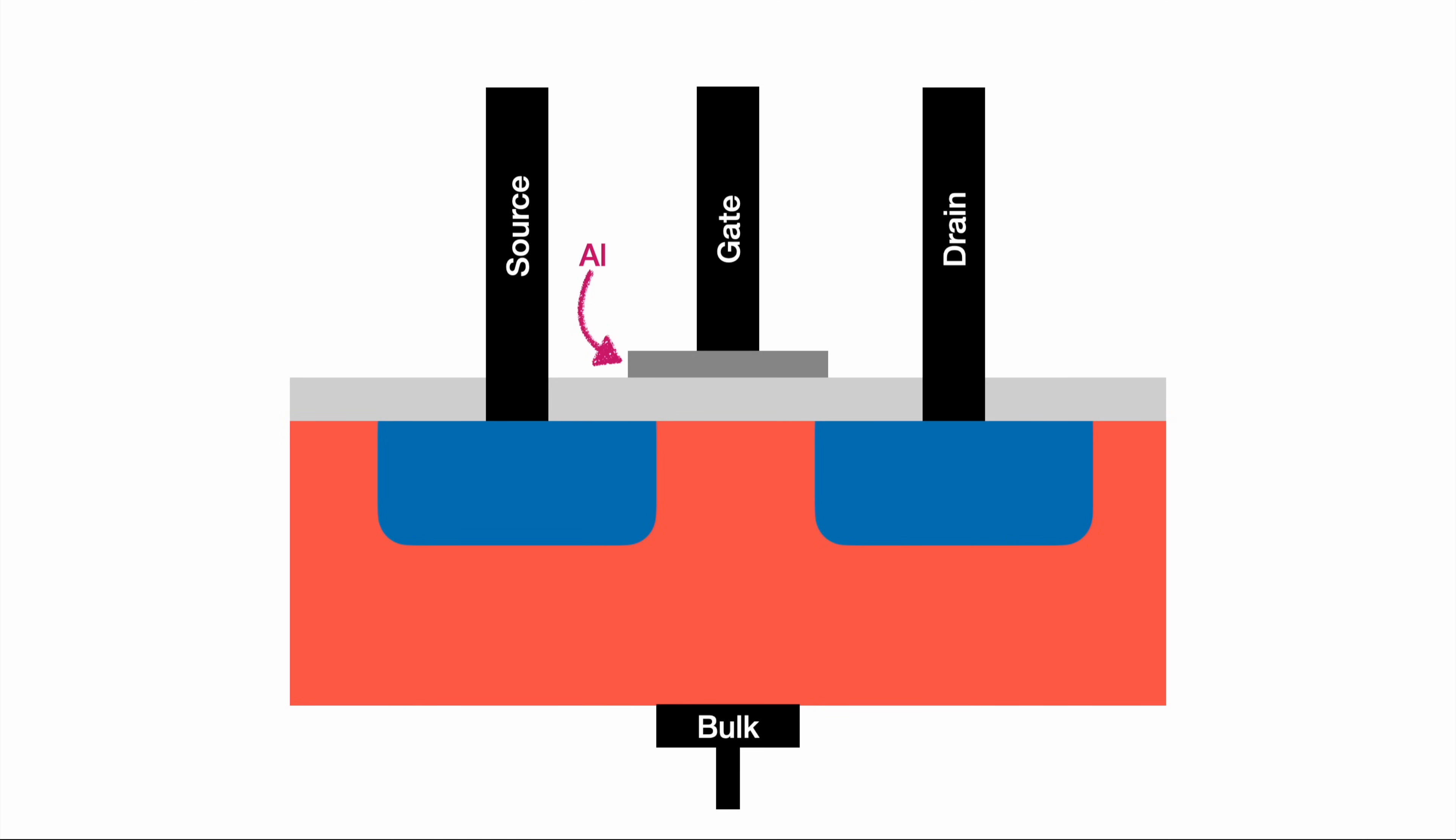Looking at what separates the aluminum from the rest of the MOSFET, we can spot this layer of silicon dioxide. That's the oxide part in the name.